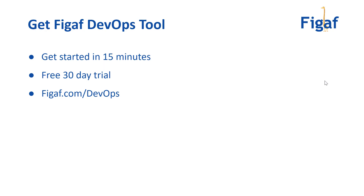I hope you find this interesting and something you want to try out. It takes about 15 minutes to get started with the VGAF DevOps tool, and there's a free 30-day trial. There's obviously a lot more than just this distribution config feature — go to vgaf.com/devops to see what it can do, download it, and see how it will simplify your CPI development process.